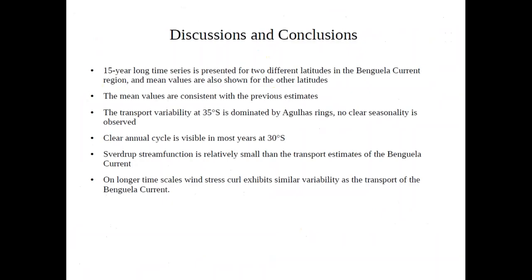In summary, we present a 15-year long time series of Benguela current transport at two different latitudes, and we also provide transport values from 35 south to 22 south. These transport values for northern latitudes are new, as I do not see them reported previously. The mean values are consistent with previous estimates when considering standard deviation and error bars. The transport at 35 south is dominated by Agulhas rings, with no clear seasonality.